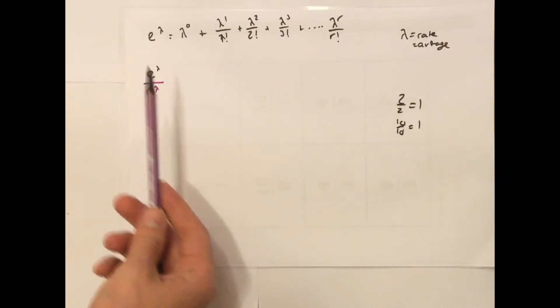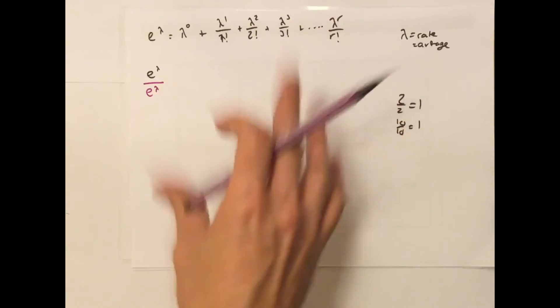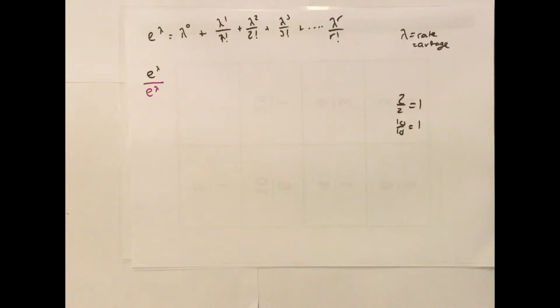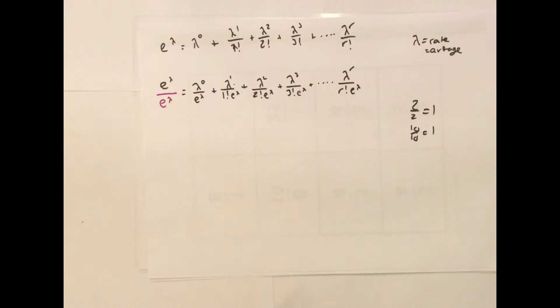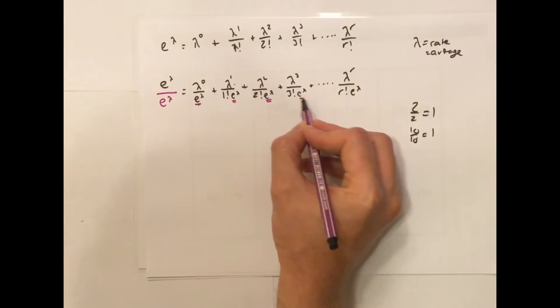If you divide this term by e to the power of lambda, we've got to divide every other single term in this list. You can have a go at actually writing what this should be once you've divided it. You can pause it, have a go at trying to complete the rest of this. So, you should have ended up with something like this, where each term has been divided by e^λ.